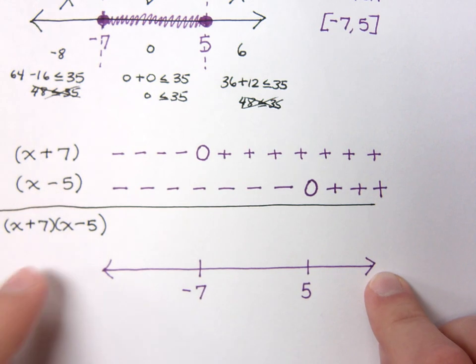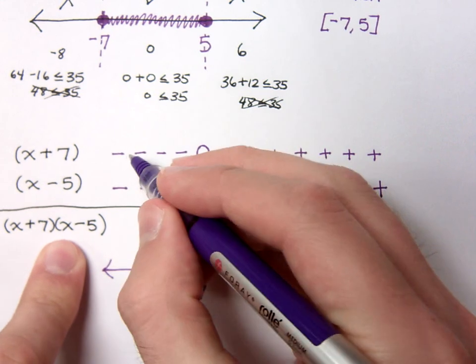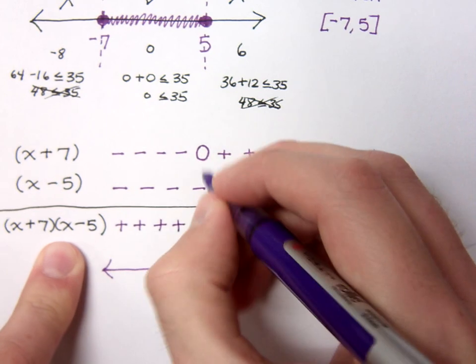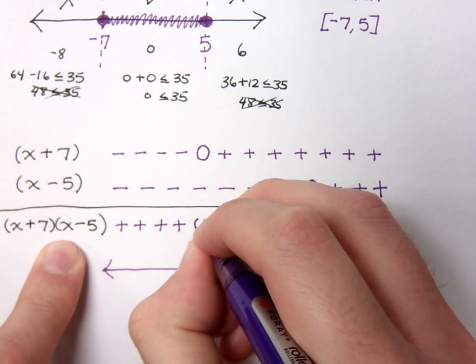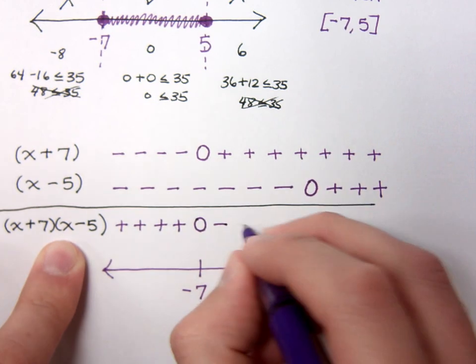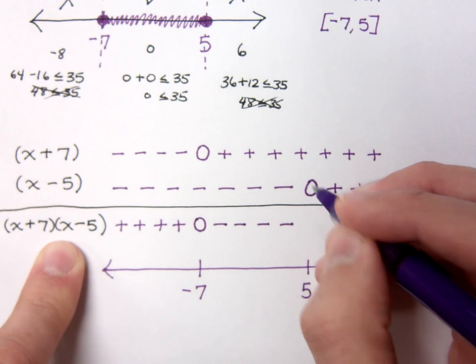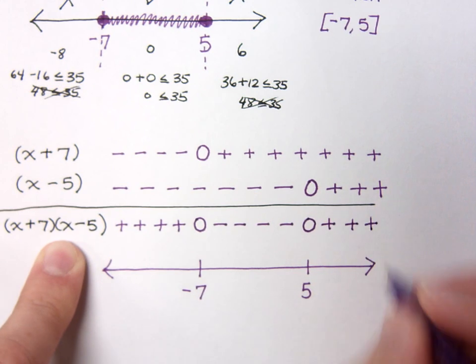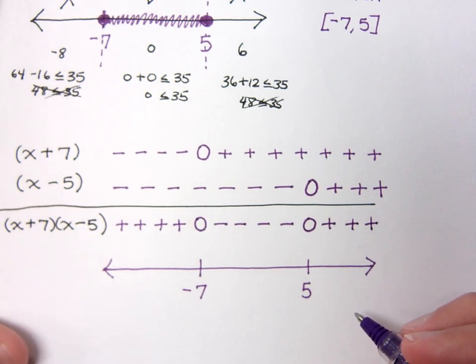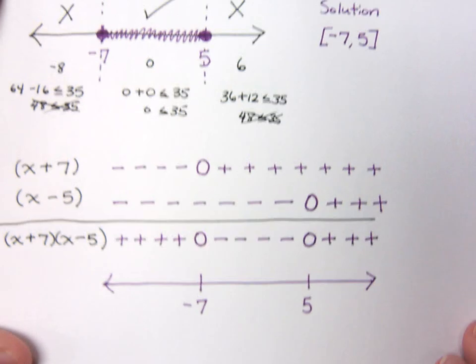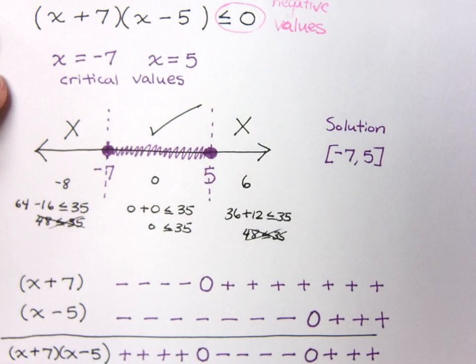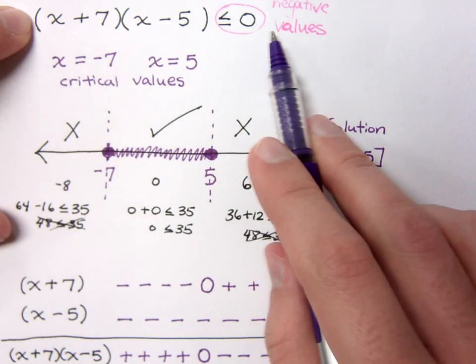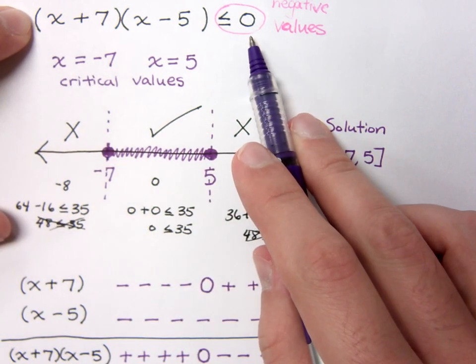Now, I want to look and see what happens when I do this actual product. So, negative times negative will yield positive values. 0 times a negative is 0. Positive times a negative will give you negative. Positive times 0 will always give you a 0. And when you multiply two positives, you're again going to get positive. So, what this is saying is that for the inequality that I had above, for this guy right here, I'm looking for those values that will be less than or equal to 0.